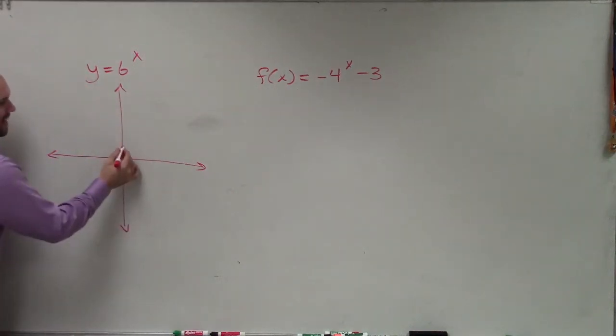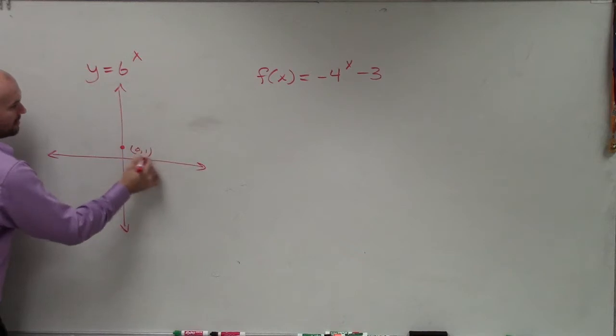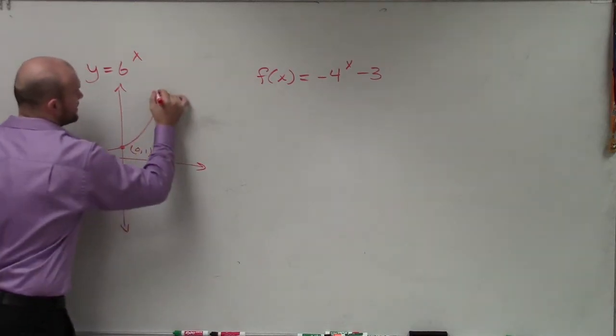this parent graph, remember, has a y-intercept at 0 comma 1. And the graph looks something like this.